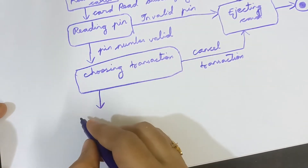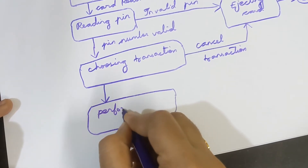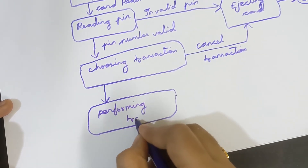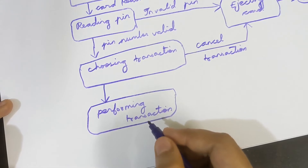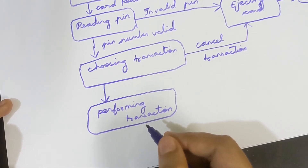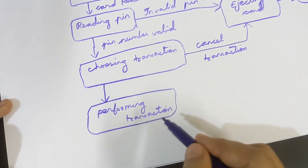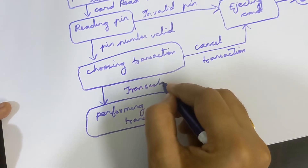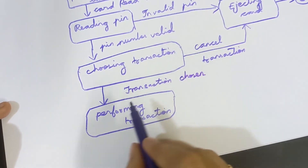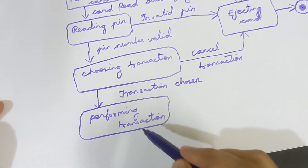From the Choosing Transaction state, it changes to another state: 'Performing Transaction.' Performing Transaction means you have chosen one of the transaction options and that operation is being carried out — withdraw, deposit, or balance check. The state changes from Choosing Transaction to Performing Transaction when the event 'Transaction Chosen' occurs.